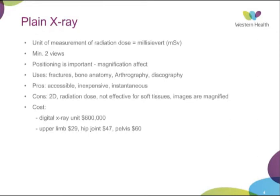X-rays can be used for basically anything: fractures, bony anatomy, arthrography and discography by injection of contrast dye within joints and disc spaces, though we don't use those as much these days because of CT and other modalities. The pros: readily accessible, inexpensive, and instantaneous. The cons: it's a 2D reconstruction, there's a radiation dose, it's not effective for soft tissues, and images are magnified. A digital x-ray unit costs about $600,000, with $100,000 per year in maintenance. An upper limb x-ray is about $29, a hip joint $47, and a pelvis $60.